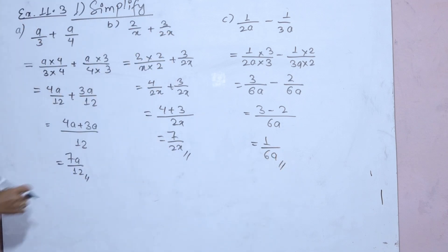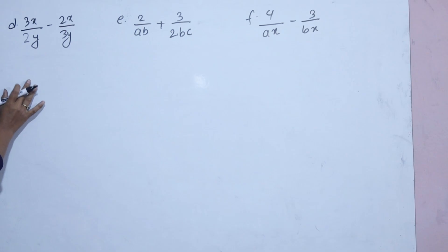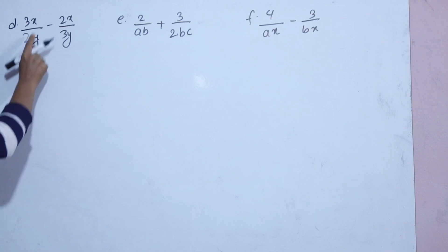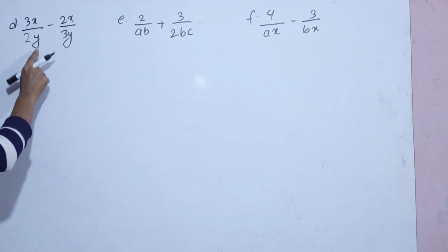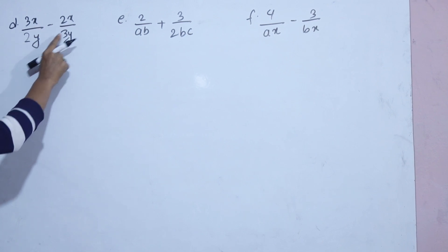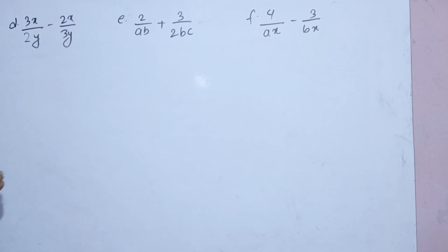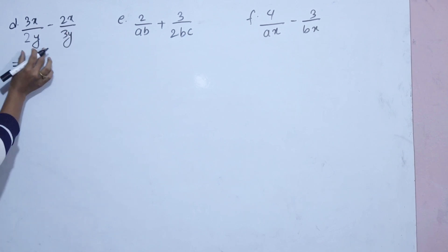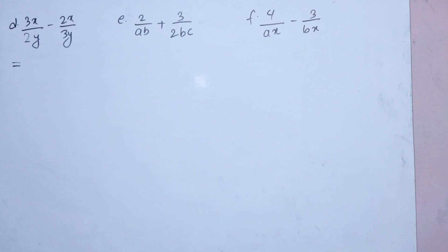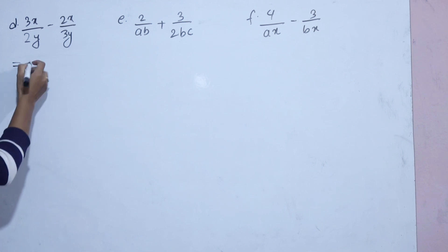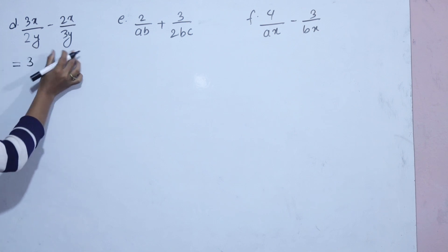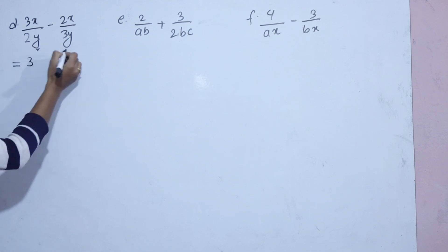Now we solve A, B, C. The next sub-question is: 3x divided by y minus 3x divided by 2y. We need to make the denominators the same by finding the LCM of y and 2y.